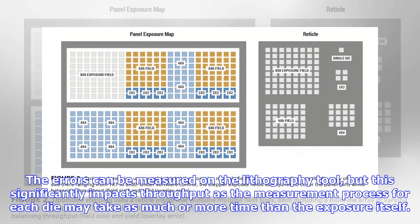The errors can be measured on the lithography tool, but this significantly impacts throughput as the measurement process for each die may take as much or more time than the exposure itself.